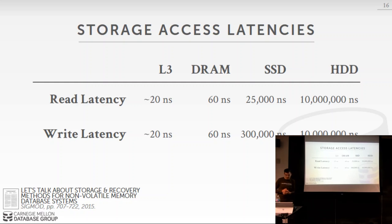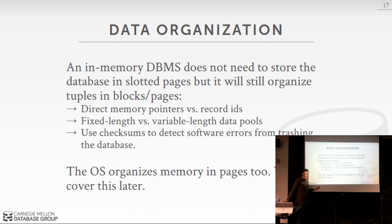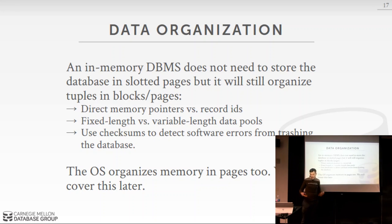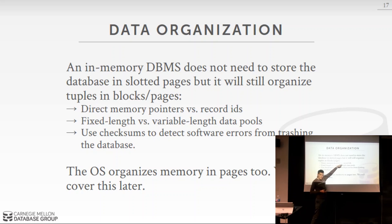In-memory databases no longer need slotted pages, since we're not packing data into disk-sized pages. We still organize tuples into blocks — we allocate a large block (e.g., 10 MB) rather than calling malloc per tuple. Because everything is in memory, we can sometimes use direct memory pointers instead of record ID indirection (page ID + slot number), though multi-version concurrency control prevents this. We also distinguish fixed-length and variable-length data with separate memory pools, unlike disk systems that pack everything into a single page.